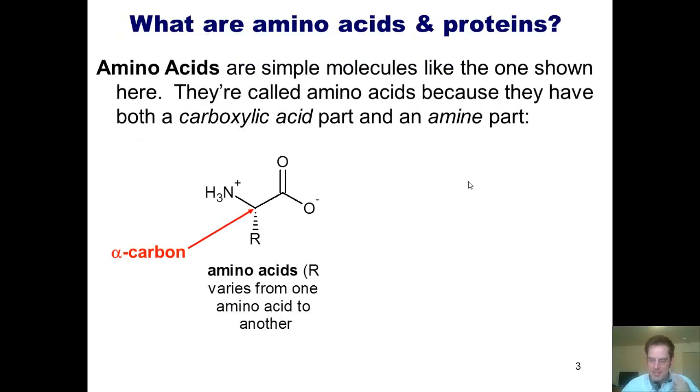So, what are amino acids and proteins? Good question, my wondrous student who's now watching this over the internet and may or may not have actually asked that question. Simply put, amino acids are molecules that look like this one right here. They're called amino acids because they contain both an amine group right here and a carboxylic acid group over here. So, we combine those two names into one magical word, amino acid.